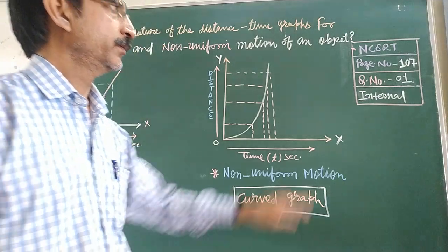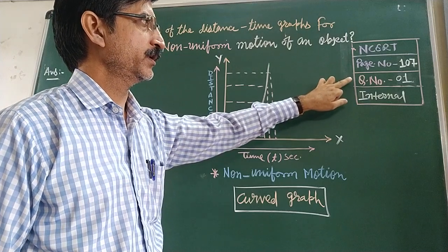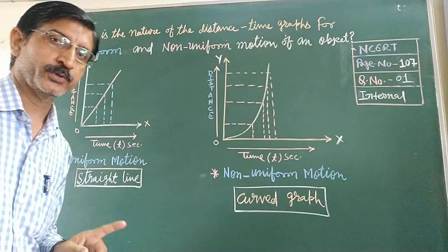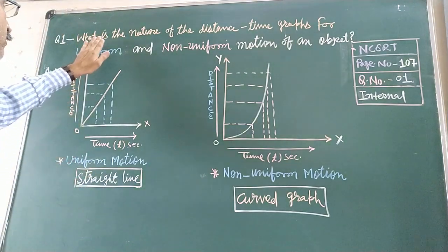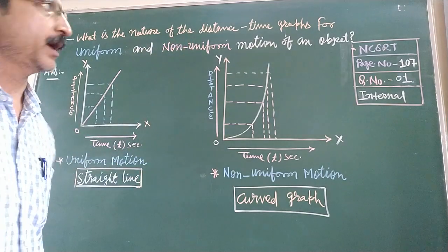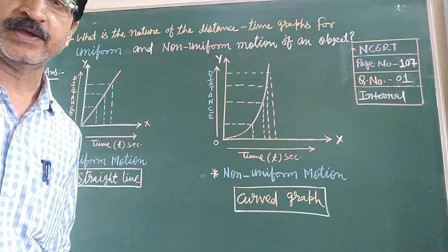NCERT class 9th chapter motion, page number 107, question number 1, internal question. This is a very important question. The question is: what is the nature of the distance-time graph for uniform and non-uniform motion of an object?